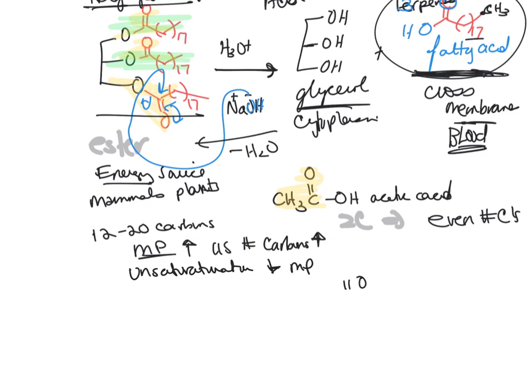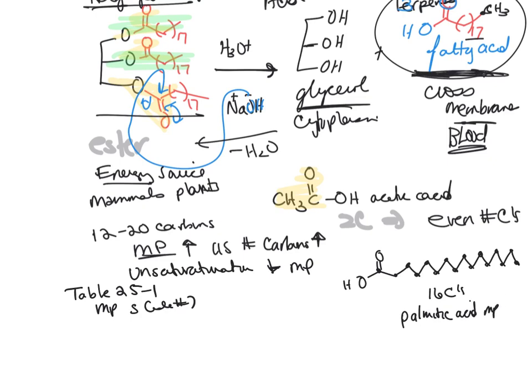So this fatty acid here, we'll draw it all out, that's 16 carbons. You have a really nice table 25-1. This is the melting points of the different fatty acids. It's slide number seven. I would recommend that you focus on that. This is called palmitic acid. This melting point is 64 degrees Celsius.